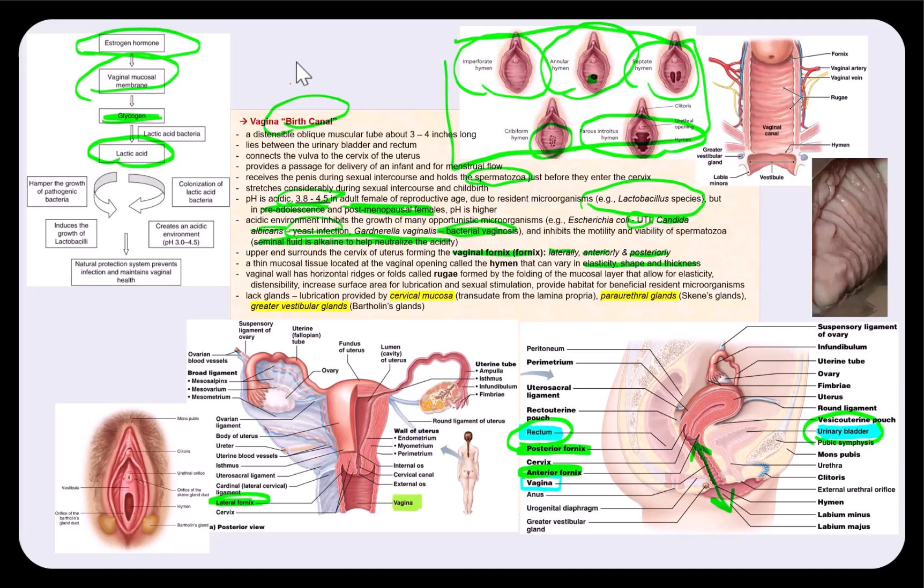Now if we look at the vaginal wall, what we find are many horizontal ridges or folds called rugae. And referring to the far upper right image, here are these rugae. And over here is an actual image of the wall of the vagina, clearly showing the many rugae.